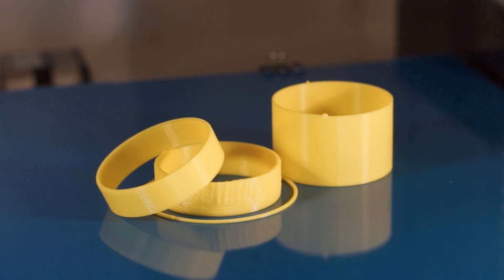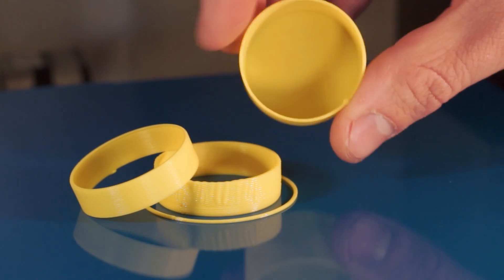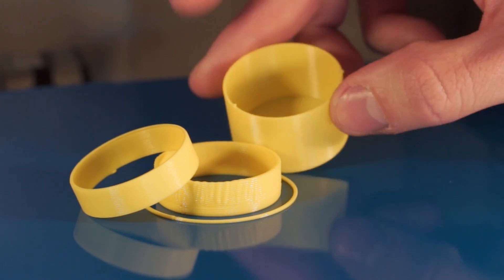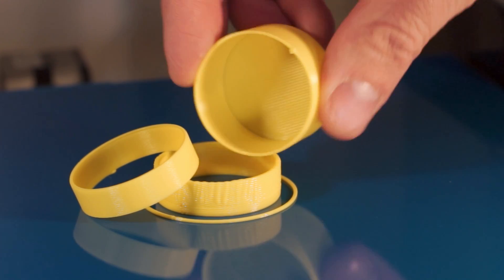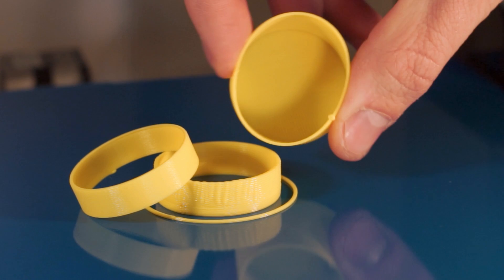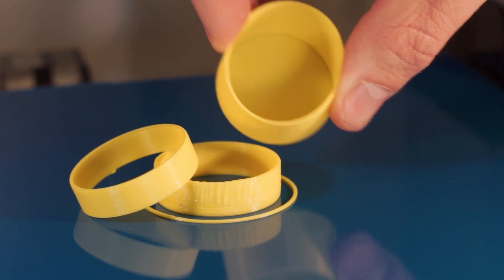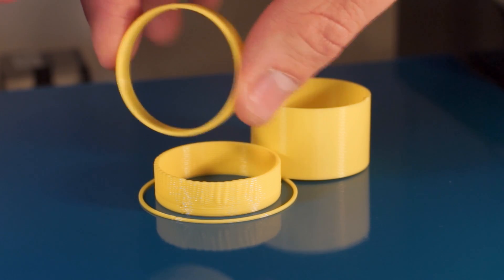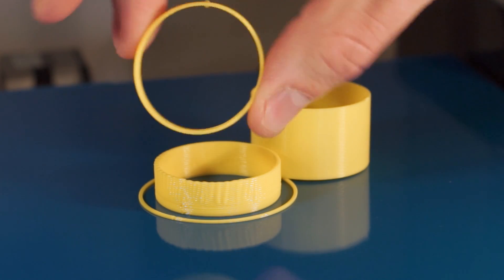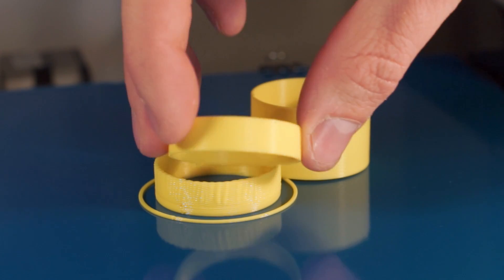Welcome back everyone. Recently I've been testing out some wider extrusion widths with vase mode. This one is 0.8 millimeters, that's two times the nozzle diameter I'm using, 0.4 millimeters. This one I printed in one millimeter, which printed really well.